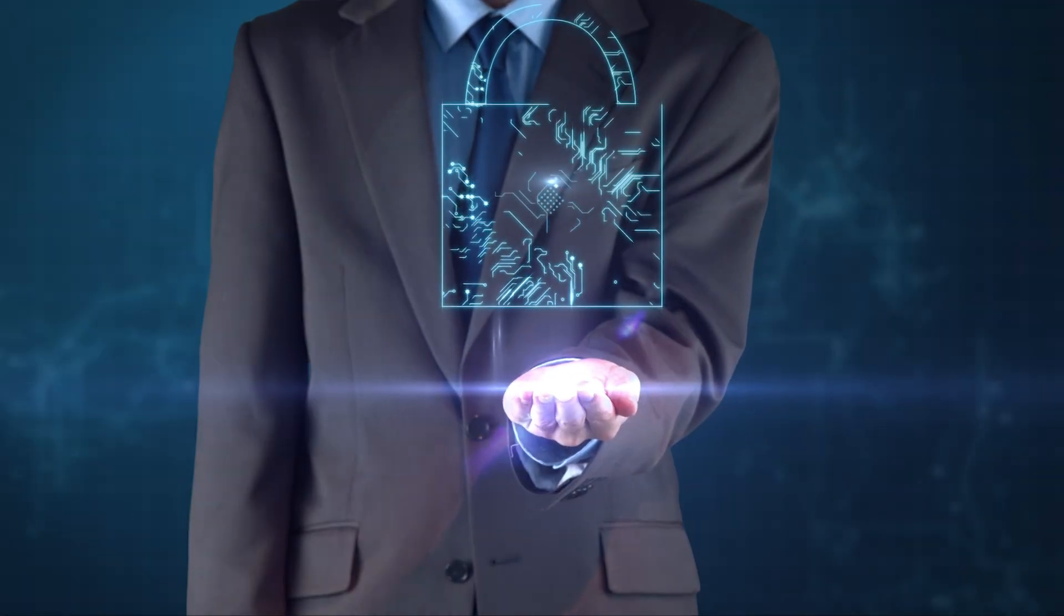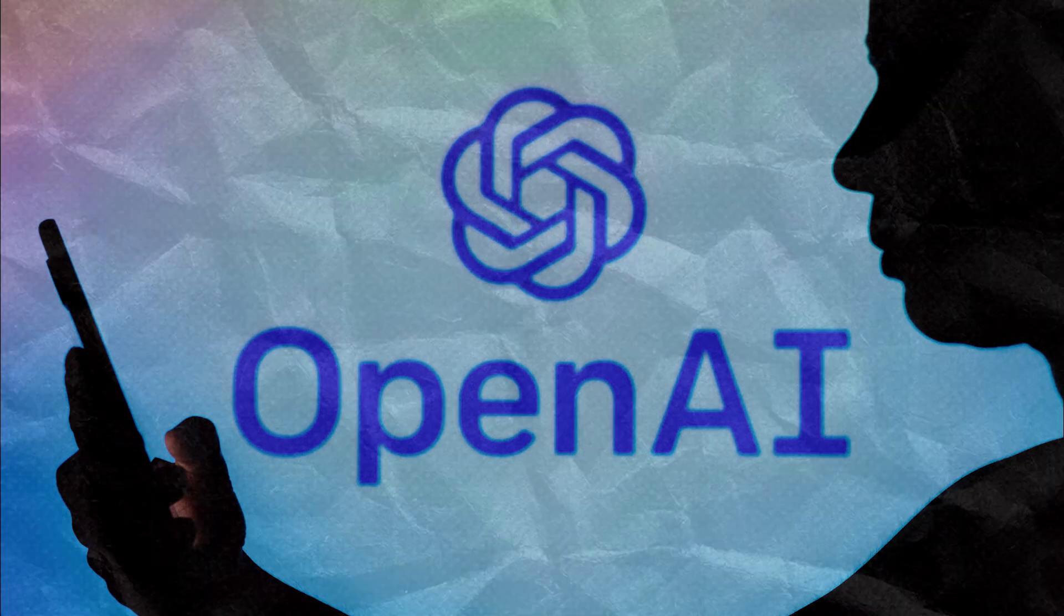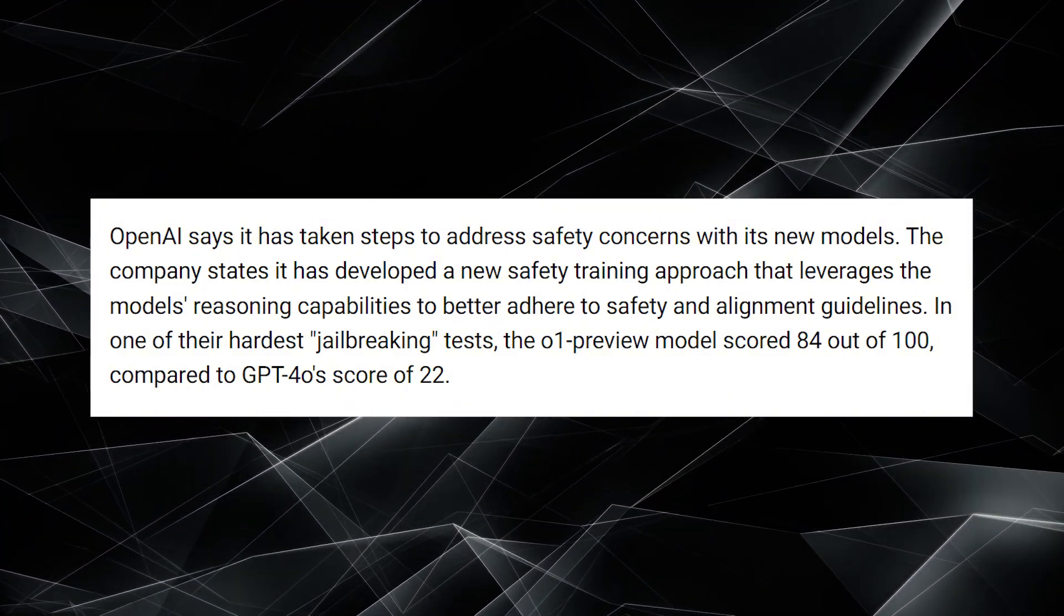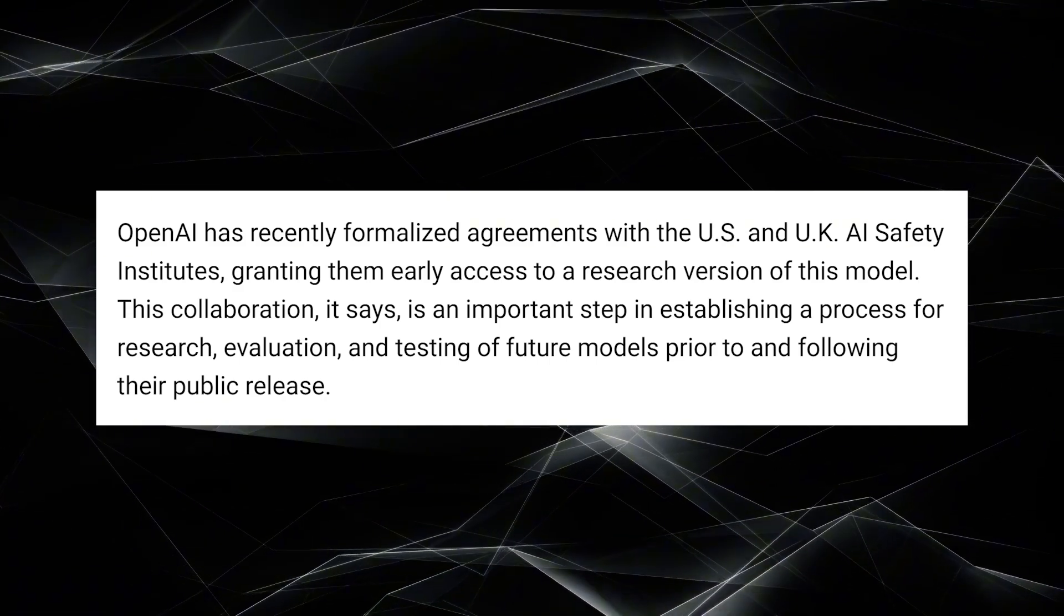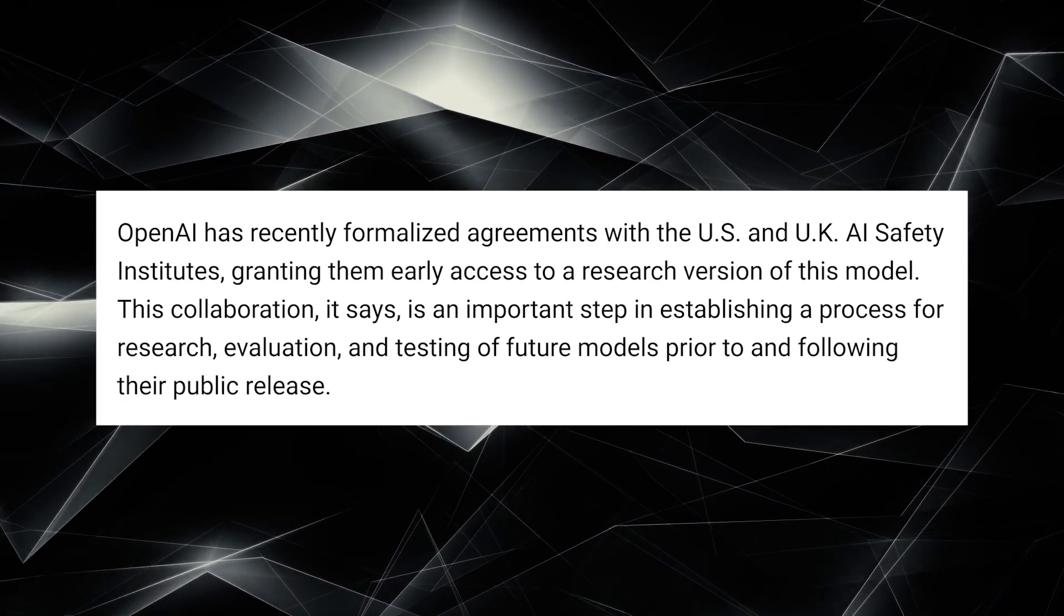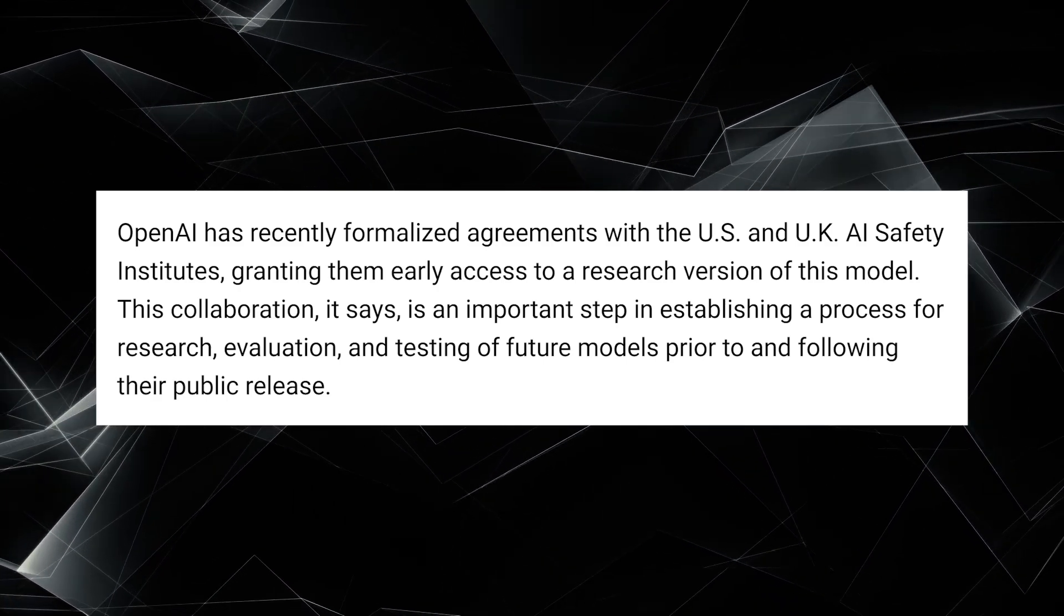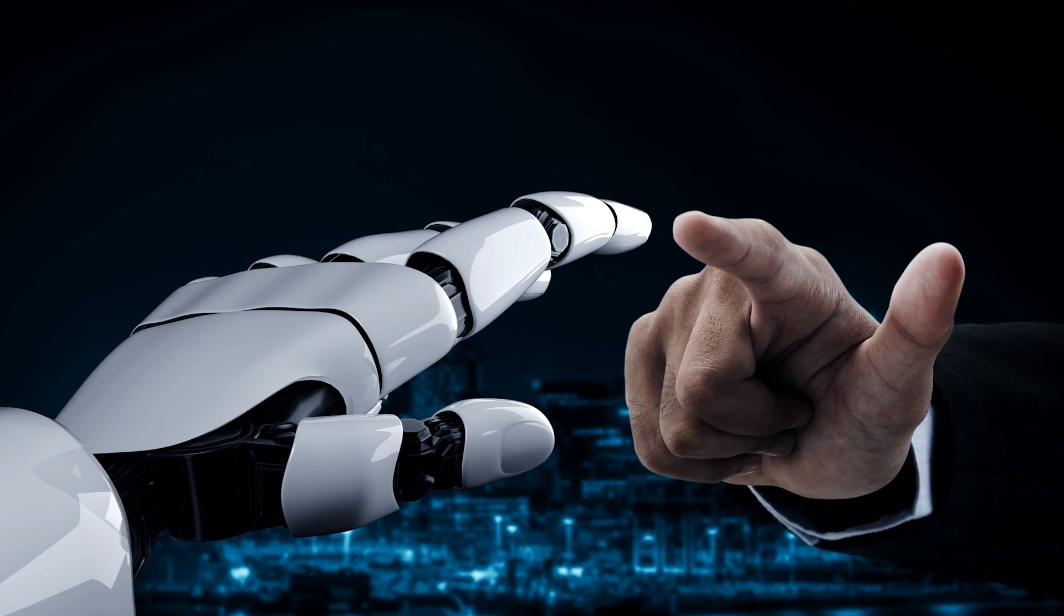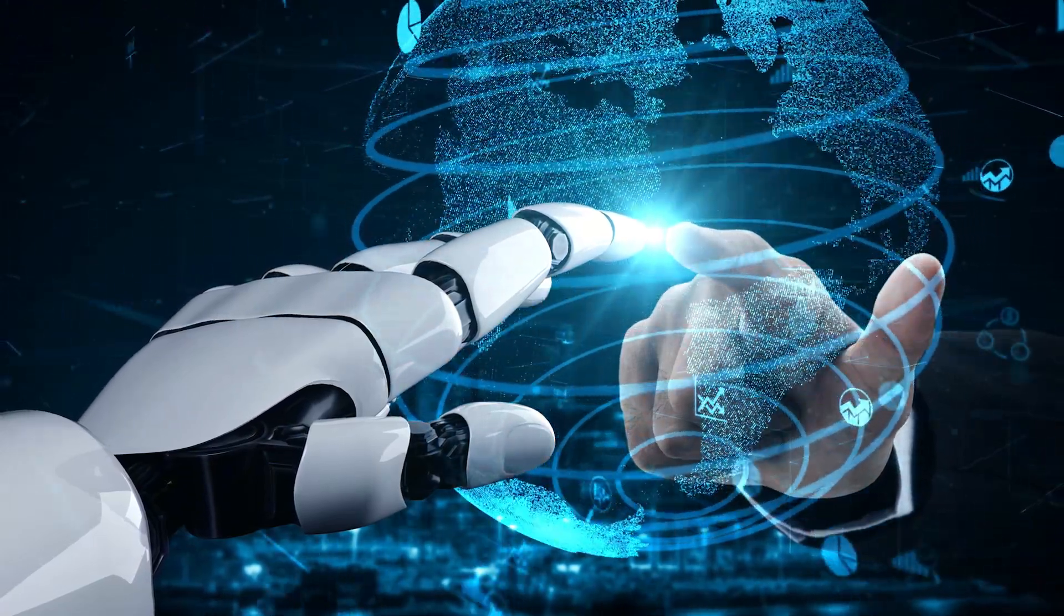One area where the Zero-One models really shine is safety. OpenAI has implemented new safety protocols to ensure these models follow alignment guidelines more strictly than before. During one of OpenAI's toughest tests to see if the model could be tricked into generating harmful content, Zero-One preview scored 84 out of 100, a huge improvement compared to GPT-4's score of 22. OpenAI is also working closely with AI safety institutes in the US and UK to rigorously test these models before making them widely available. OpenAI's collaboration with AI safety institutes is a testament to their commitment to responsible AI development. These partnerships allow for independent verification of the model's safety features and help identify potential vulnerabilities before the models are widely deployed. This collaborative approach also helps in developing industry-wide standards for AI safety, which is crucial as AI systems become more prevalent in critical applications like healthcare, finance, and national security.